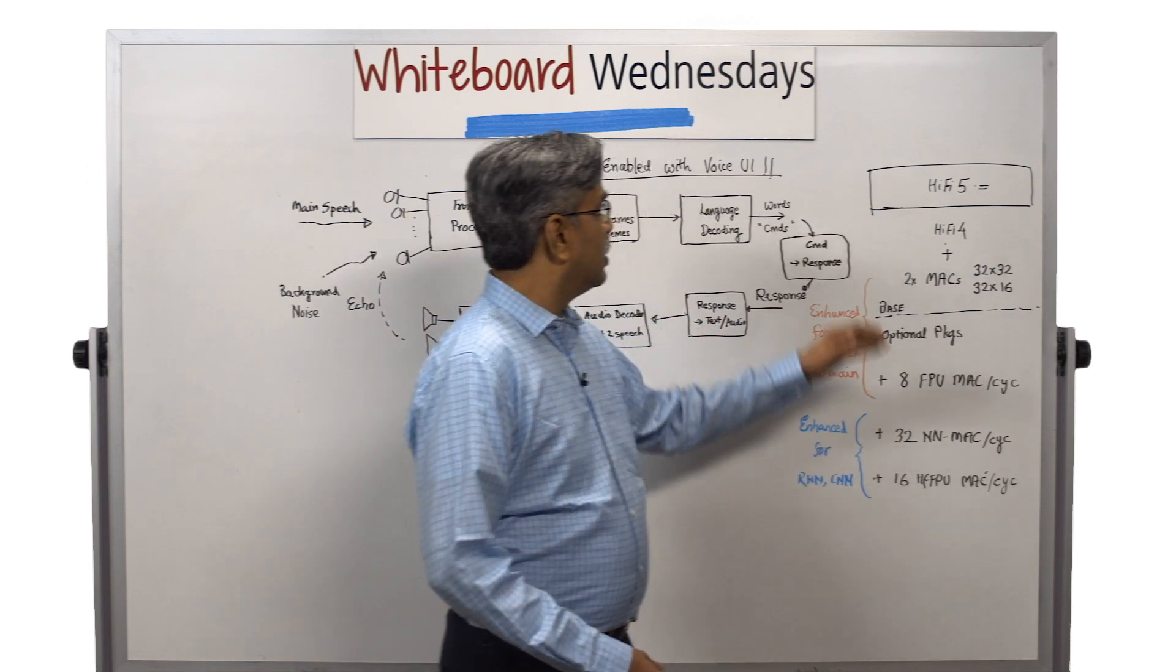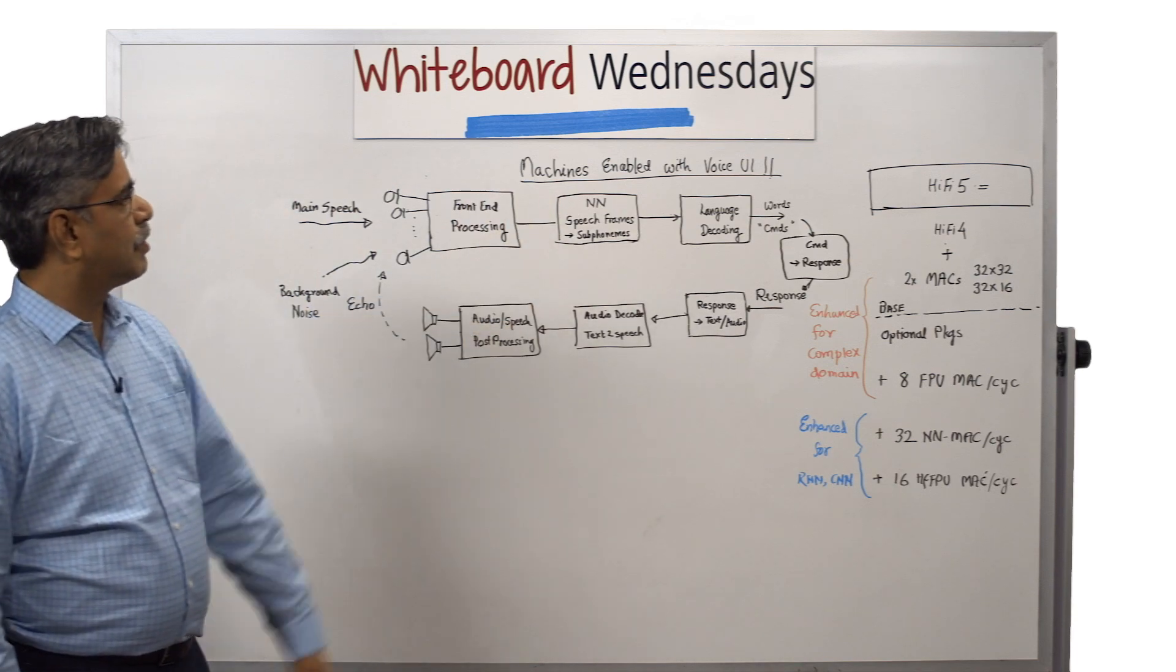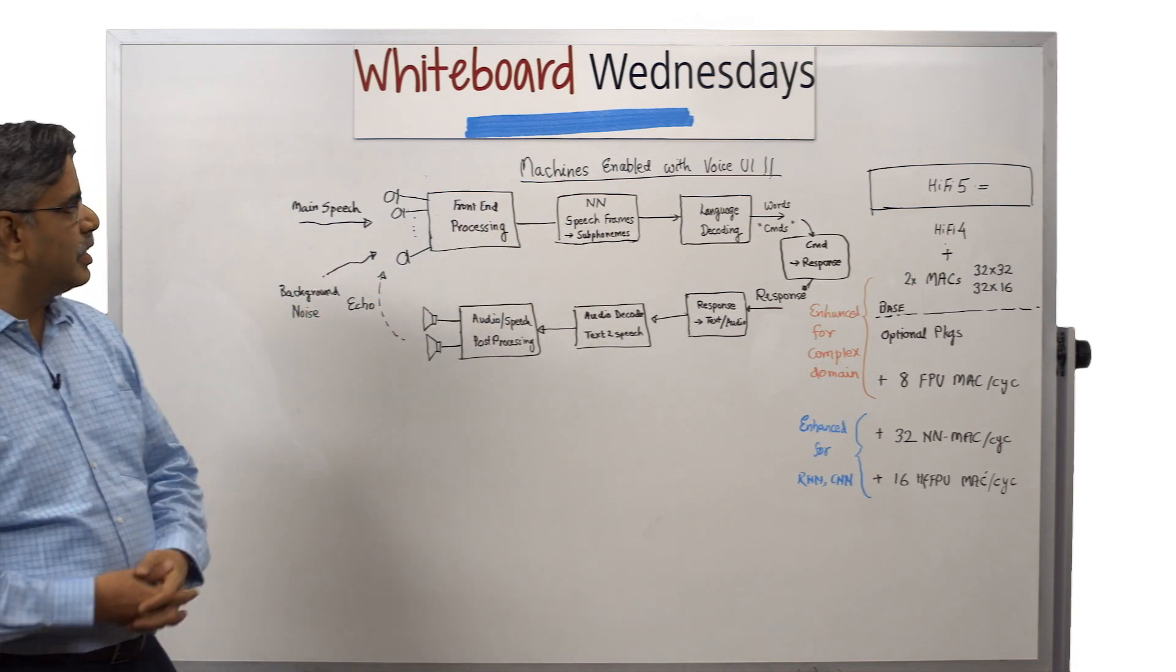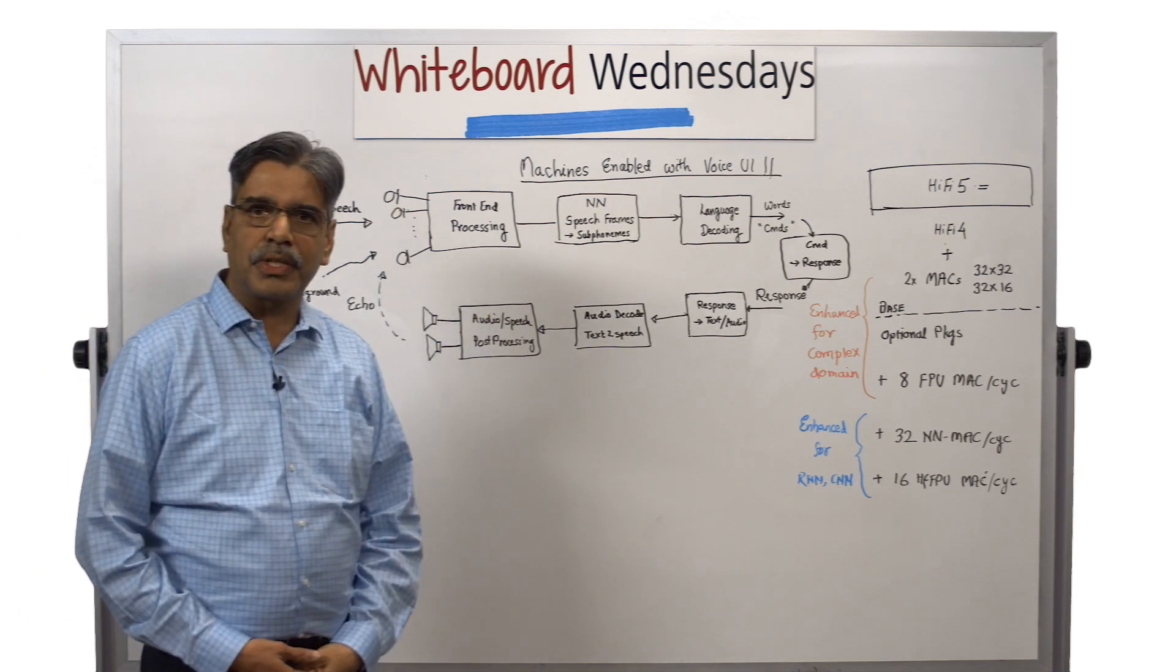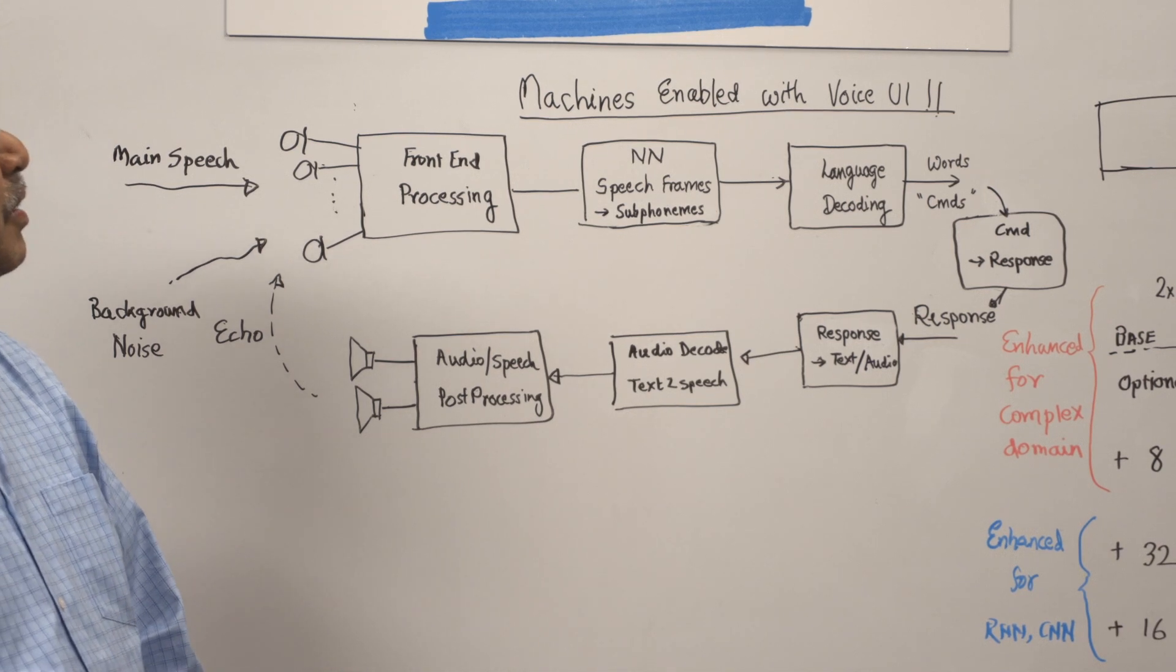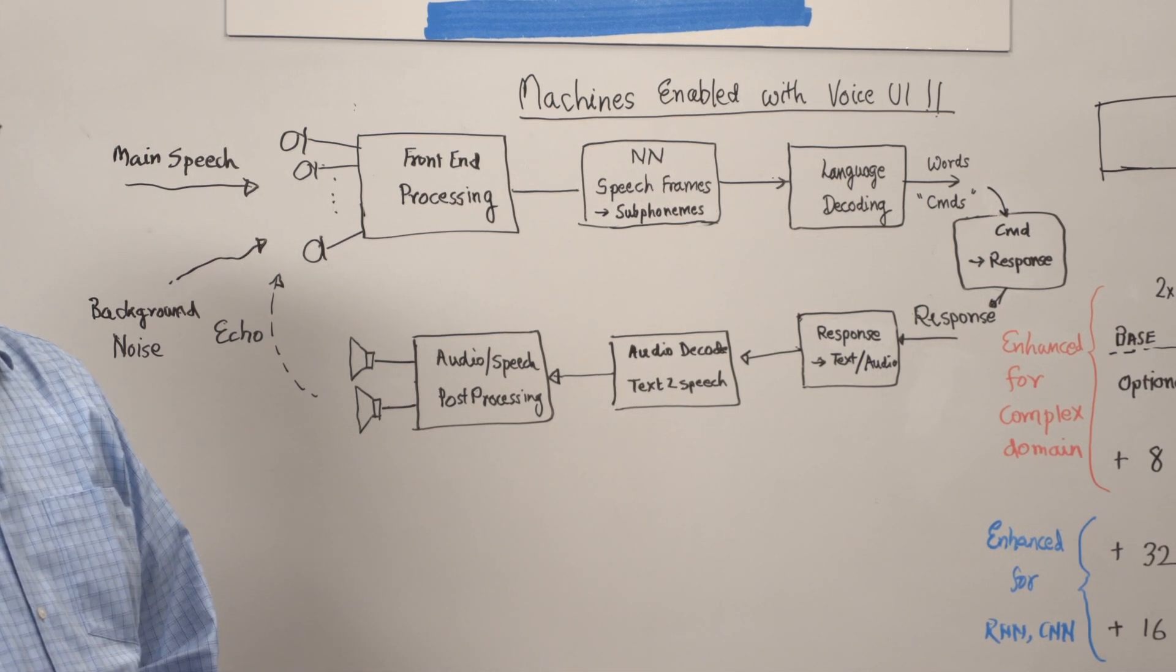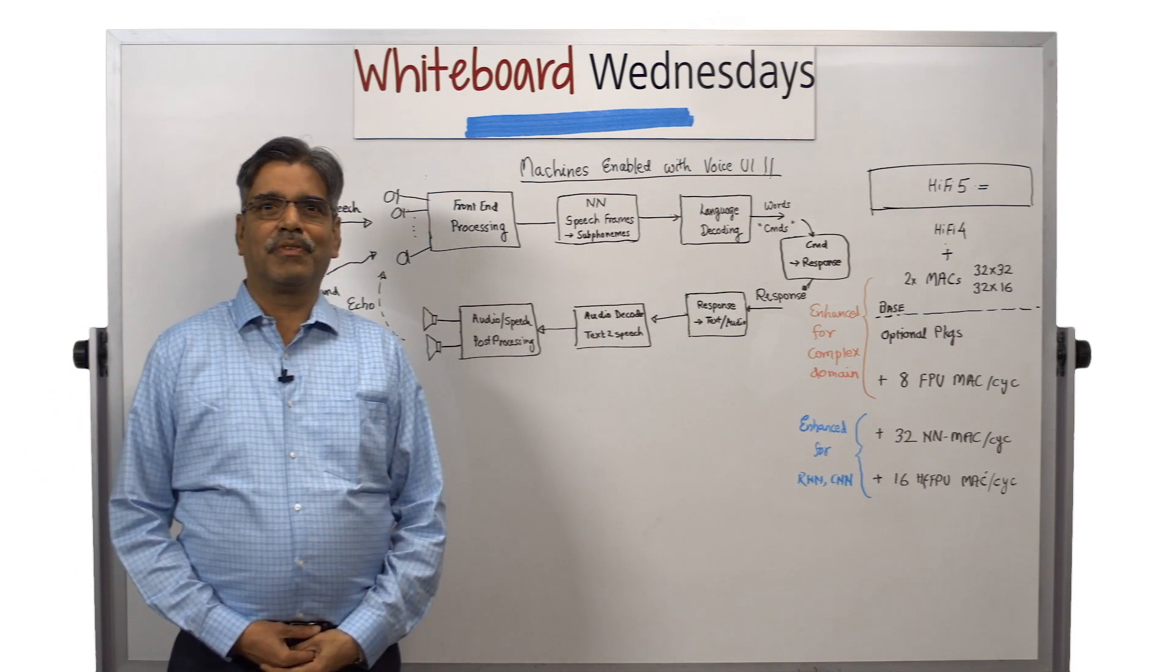So the HiFi 5 really addresses machines enabled with voice UI which tries to do not just audio pre-processing, complex domain audio pre-processing, but also the neural network part which is required for voice-enabled UI machines. Thank you for watching Whiteboard Wednesdays. See you next time.